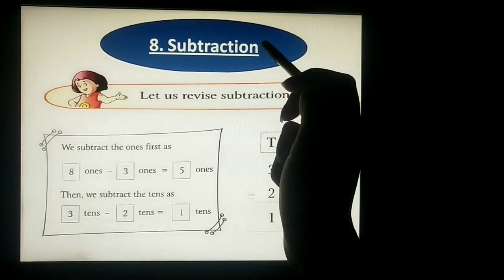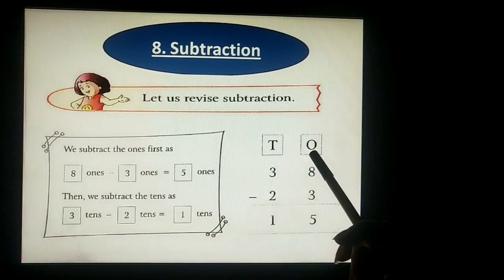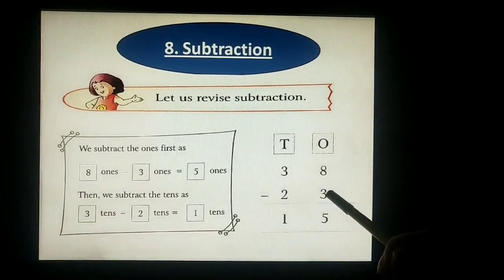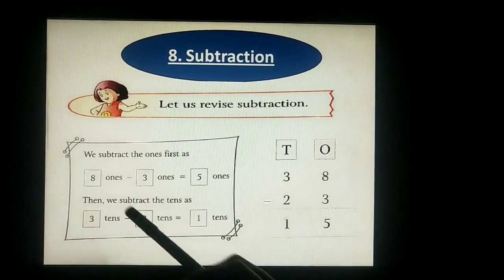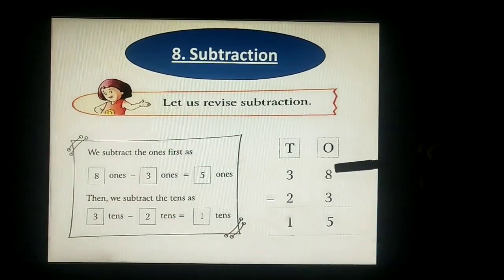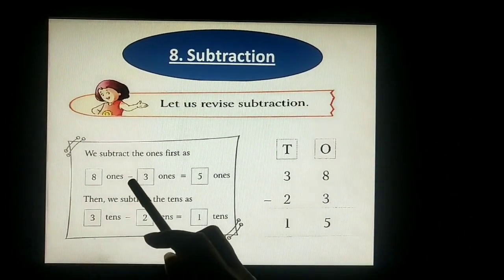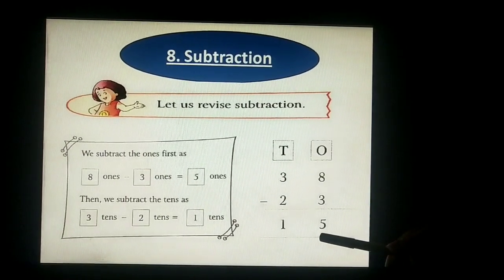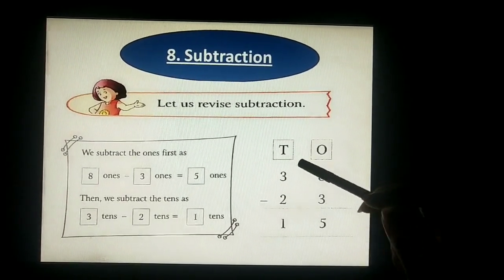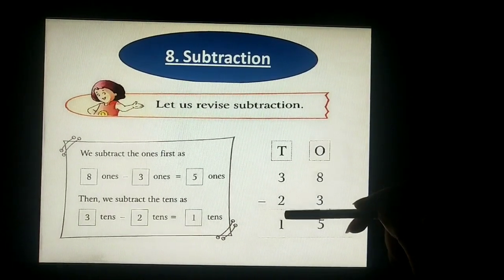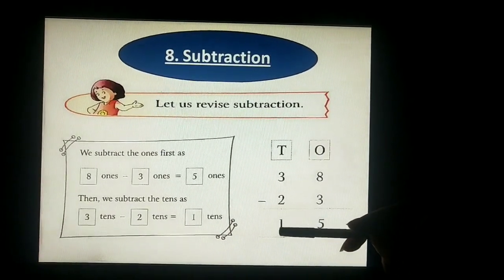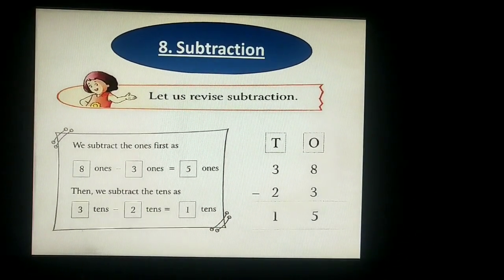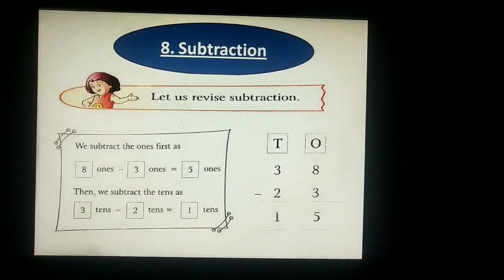Next topic is subtraction — let us revise subtraction. O represents ones place, T represents tens place. 38 minus 23 — there are some rules: firstly, we subtract the ones place first. 8 ones minus 3 ones is equal to 5 ones, so we write 5. Then we subtract the tens: 3 tens minus 2 tens gives 1 ten. So 38 minus 23 is equal to 15. Hope you understand this topic. Thank you and please subscribe our channel.